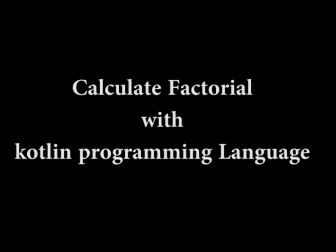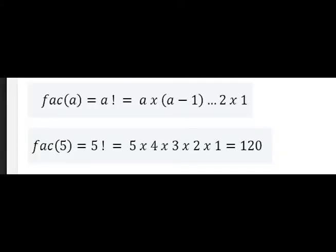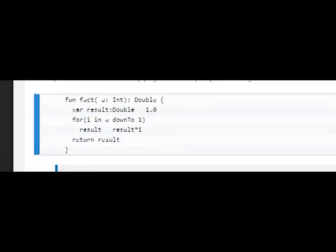Calculate factorial with Kotlin programming language. This operation is a result of multiplying a number by all positive integers smaller than it. The factorial value is accumulated in the result variable.